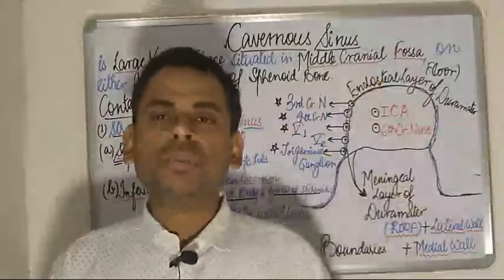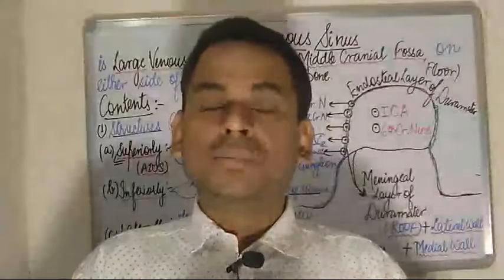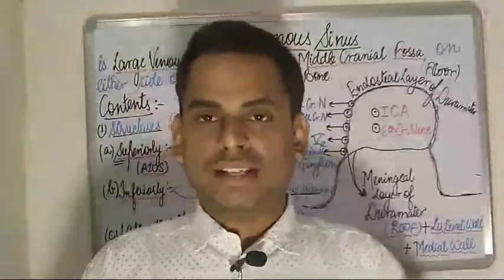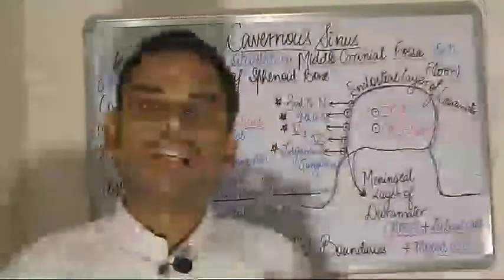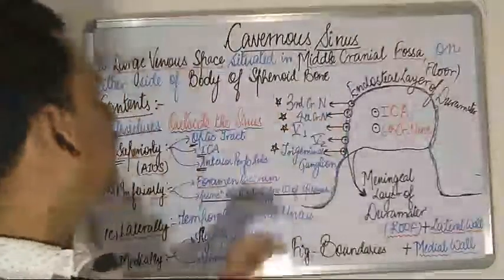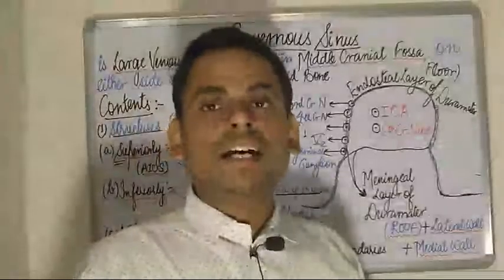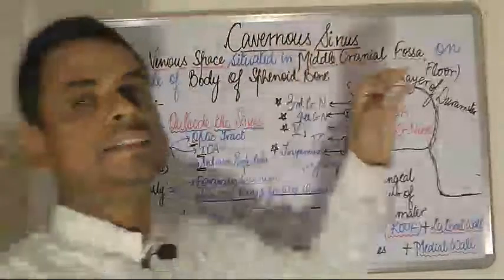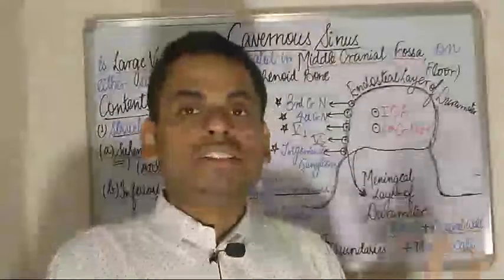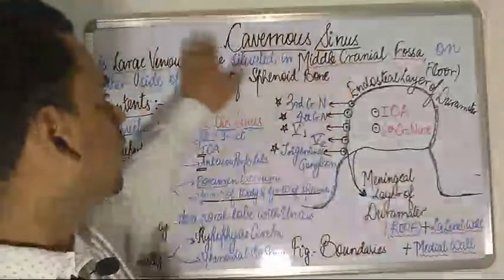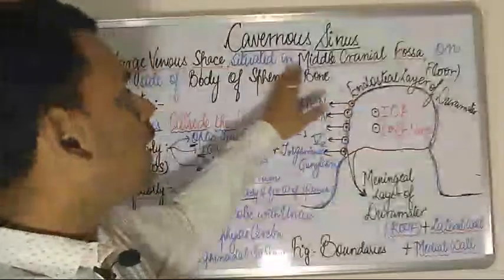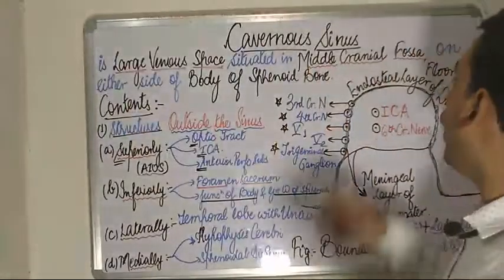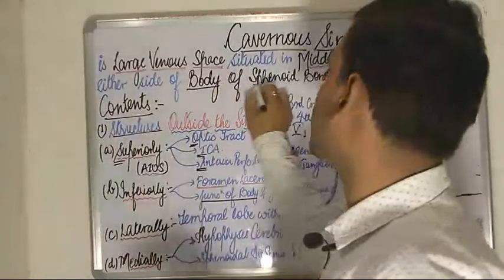This video will mainly focus on the boundaries and the contents of the cavernous sinus. The cavernous sinus is a large venous space. Since it is a paired sinus, each cavernous sinus is a large venous space situated in the middle cranial fossa on either side of the body of the sphenoid bone.